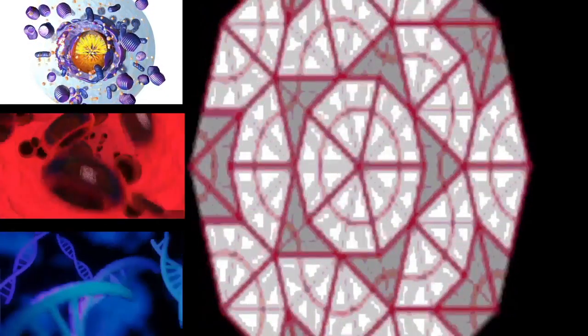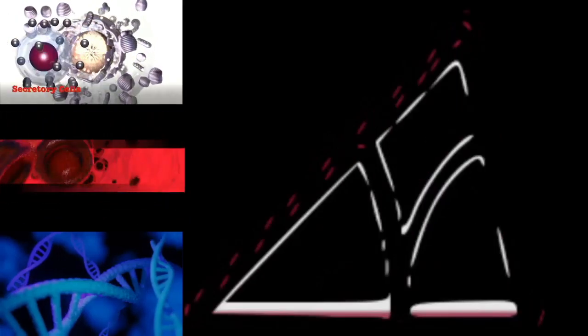This can occur when cells become overcrowded (density-dependent inhibition) or when they differentiate to carry out specific functions for the organism, as is the case for human heart muscle cells and neurons. Some G0 cells can re-enter the cell cycle.